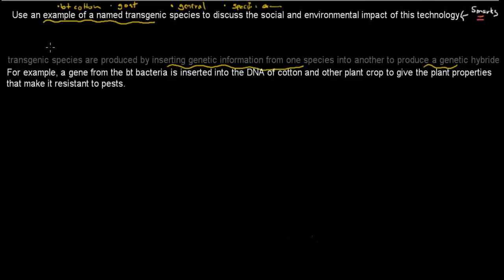Next is the example. For example, a gene from the BT bacteria is inserted into the DNA of cotton and other plant crops to give the plant properties that make it resistant to pests. So by inserting this BT bacteria gene into a plant, the plant itself becomes resistant to pests.